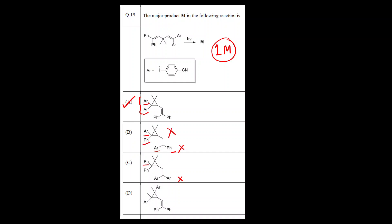Since this was a one-mark question, if you know the trick you can straightaway look at which groups are attached to the three-membered ring. The two Ar groups are more stable, so mark option A directly. Option with one Ar and one Ph is incorrect; two Ph groups is incorrect; and option D has two Ar groups but both on the same carbon — that is also incorrect. The only correct answer is option A. I hope you understood the mechanism and the trick for solving this question.